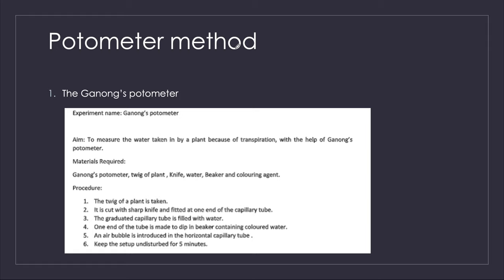There are several potometers — Darwin's potometer, the farmer's potometer, and many others. But for measuring transpiration we use the Ganon's potometer. The aim of this experiment is to measure the water taken in by plants because of transpiration with the help of Ganon's potometer. Materials required are: the Ganon's potometer, a twig of a plant, a knife, water, a beaker, and a coloring agent.